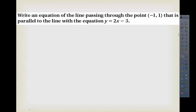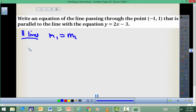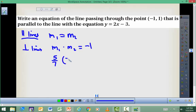We need to use the facts from the previous lesson. Fact number 1: if you're dealing with parallel lines, then slope 1 equals slope 2. If you're dealing with perpendicular lines, then slope 1 times slope 2 equals negative 1. One slope must be positive and one negative for the product to equal negative 1.